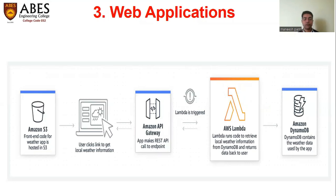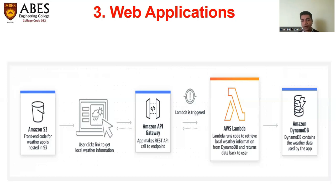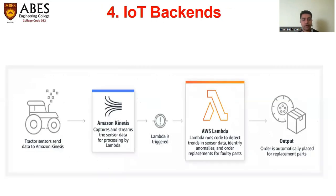The third thing Lambda can do is web applications. We can attach Lambda with web APIs - like the web APIs of Netflix, Gmail, Zomato, and all the food processing apps. Those APIs are going to directly communicate with AWS Lambda servers. In the end, Amazon DynamoDB contains the weather data used by the app. So a weather API attached with AWS Lambda gives us real-time updates of the weather data.